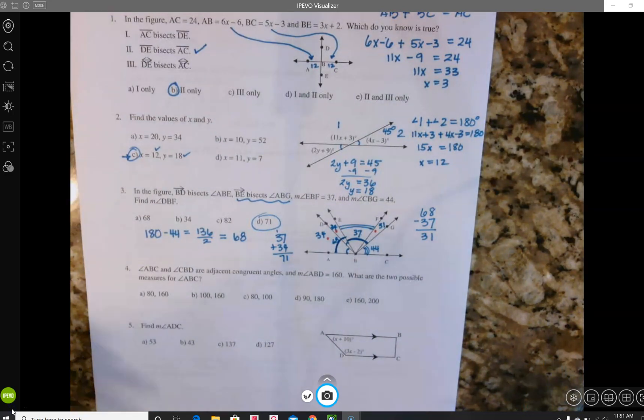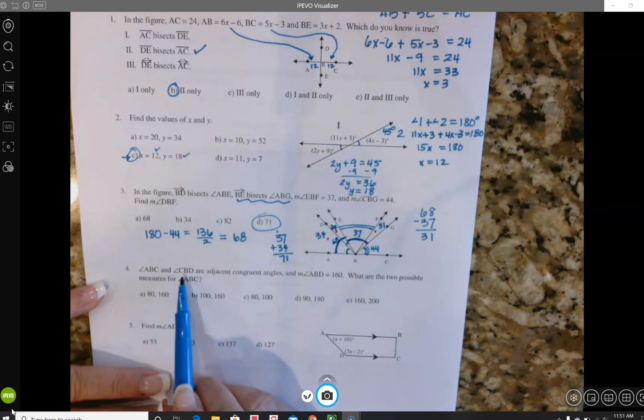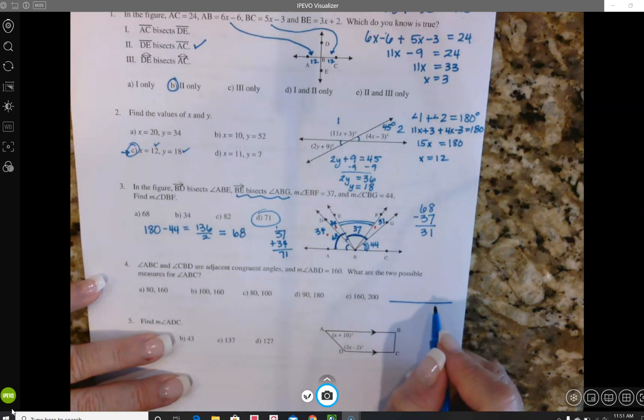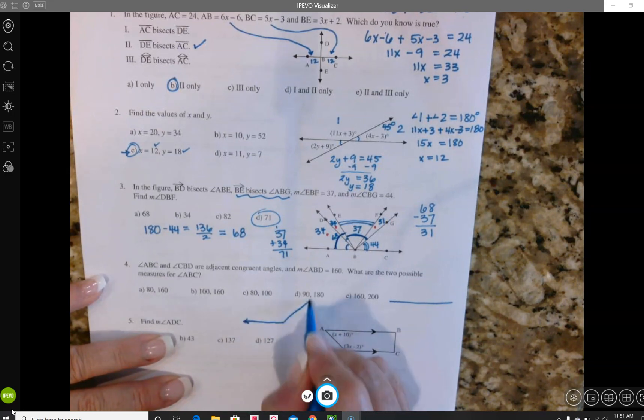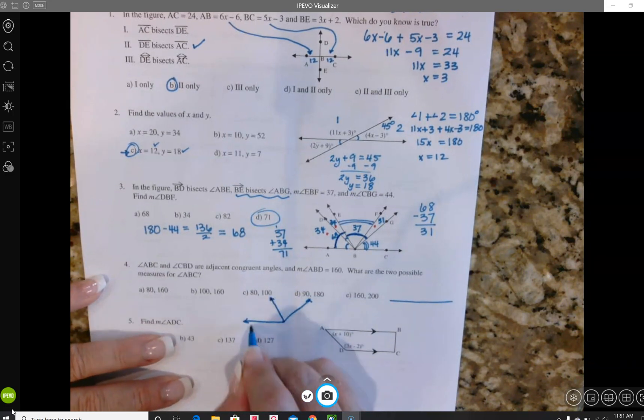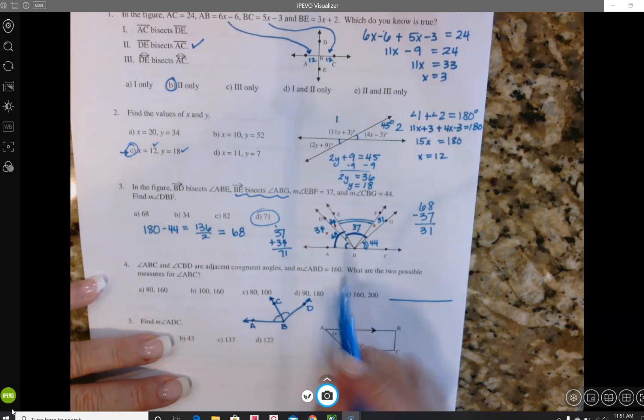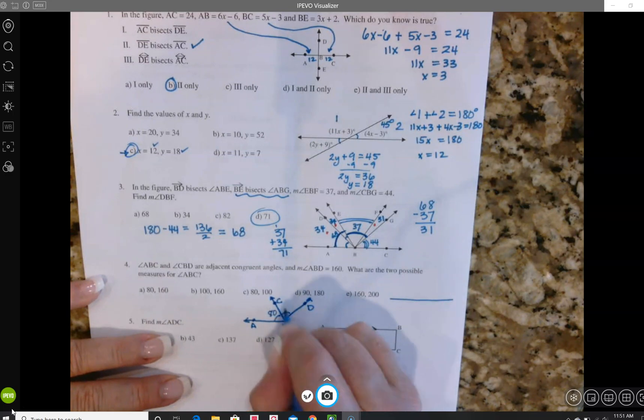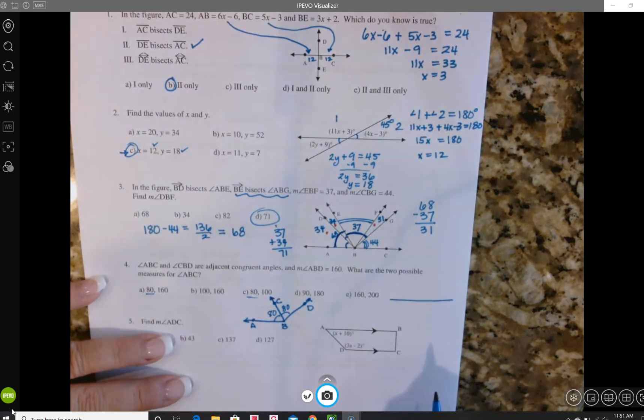Okay, so for number four we have to draw our own picture, we're not using the picture right above. So I've got ABC and CBD are adjacent congruent angles, so I'm going to draw, let's see I don't want a straight line angle, I'm just going to make like a big obtuse angle. And then I'm going to go here's ABC and CBD and they're going to be adjacent and congruent. And then all together ABD is equal to 160, so I could have an 80 and an 80 because they're both congruent. So 80 has to be one of my answers, so already I've narrowed down my choices to A or C.